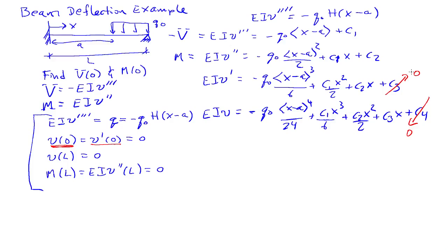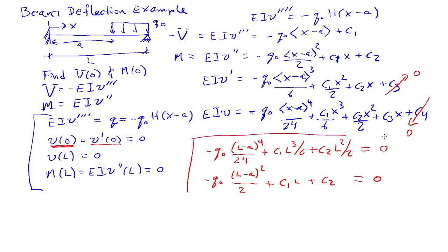The last two boundary conditions can be slightly more complex. So if I want 0 deflection at X equals L, I'm going to find out that minus Q naught, L minus A to the 4 over 24, plus C1 L cubed over 6, plus C2 L squared over 2 equals 0. Notice I changed from the Macaulay bracket to regular parentheses because L is greater than A. And then the moment condition for 0 moment is going to tell me that minus Q naught, L minus A squared, again using regular parentheses, plus C1 L plus C2 equals 0. So here I have a system of two equations in two unknowns that I need to solve for C1 and C2.